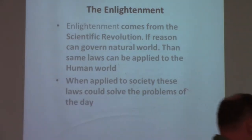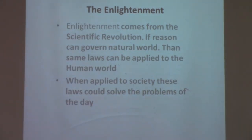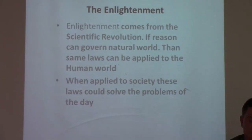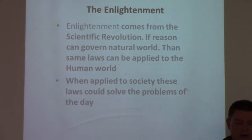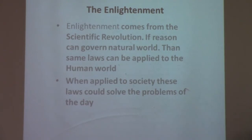So the Revolutions Unit — a little bit of background — comes from the Enlightenment. The political ideas of the Enlightenment are going to come right out of the Scientific Revolution, where thinkers like Nicholas Copernicus brought about a new way of looking at the physical world. It was thought that if reason can be used to govern the physical world, then reason could also be applied to understanding natural laws.